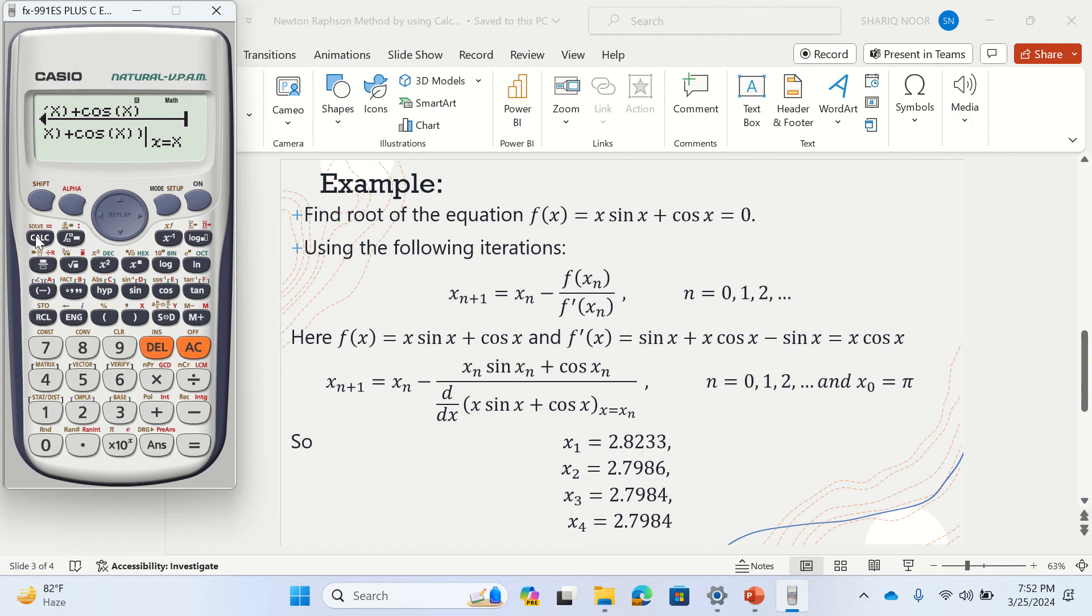Just press calc. It would ask for the value of x from you, and we have taken that as π. So I may go with shift and then give it π. Press equal. So you would get 2.823282767. If you round it up, that becomes 2.8232, the same value here.